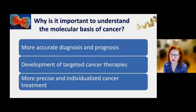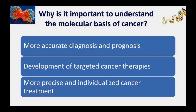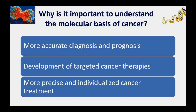Why is understanding the molecular basis of cancer important? It provides more accurate diagnosis and prognosis of disease. It's also a huge area of research: developing targeted cancer therapies. Once we know a particular gene is turned on when it shouldn't be, we can target that specifically to block it in cancer cells. This leads to more precise and individualized cancer treatment.